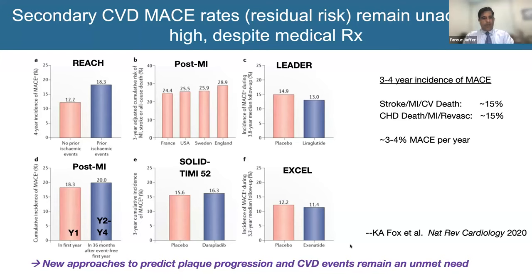Despite our best medical therapy, as shown in a nice review from Keith Fox in 2020, we have four-year event rates of 15%, roughly three to four percent per year, and this is probably for life. If you look at someone young in their 50s or 60s, the chance of having a significant recurrence by age 80 is probably well over 50%. So can we do better?